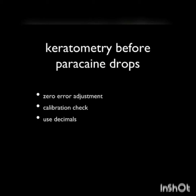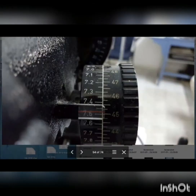To take a proper keratometric reading, remember: keratometry should be done before applying any drops on the cornea — before applying paracaine eye drops. Once a month, please do a zero error adjustment and also do a calibration check on your instrument. You should start noting down keratometric readings using decimals and not 0.25 steps.